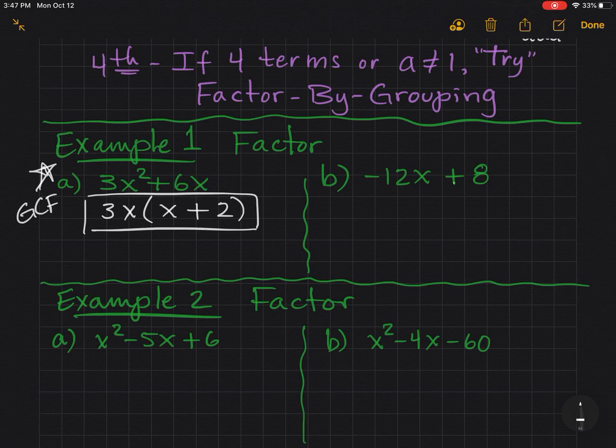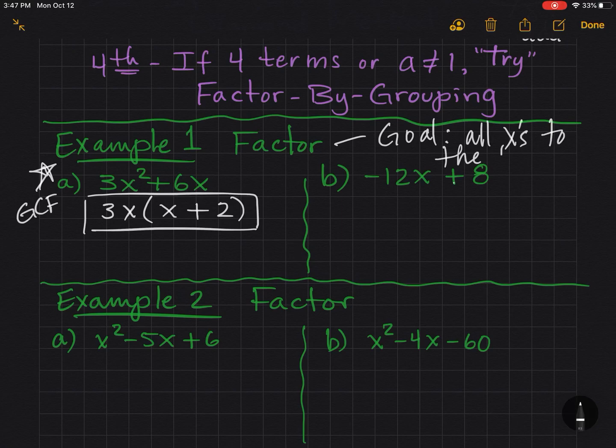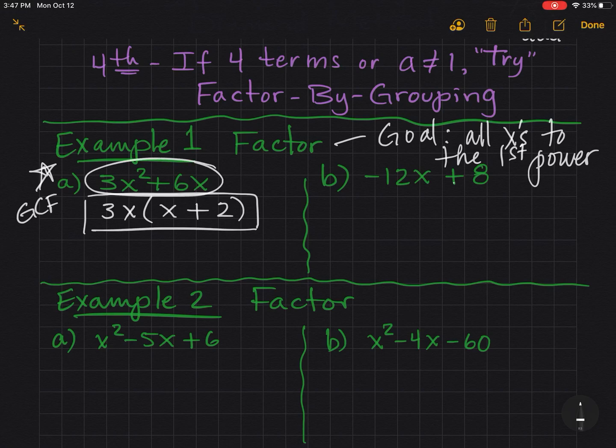So now, that's our answer. The goal of factoring, just factoring in general, is to get all the x's to the first power. So I have that, and the GCF is gone, and that's good. If I were to multiply this back together, I would get what I started with.